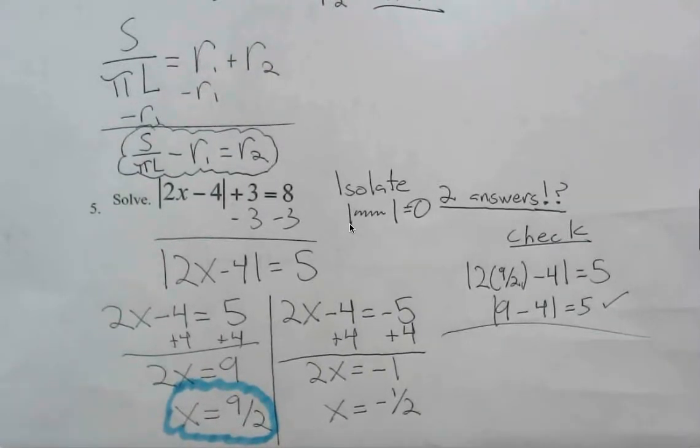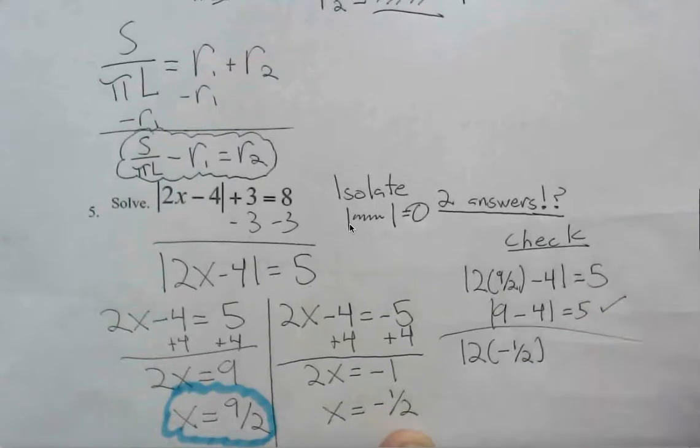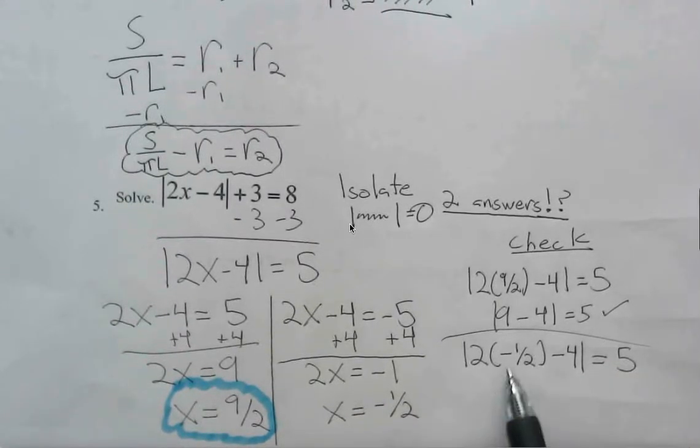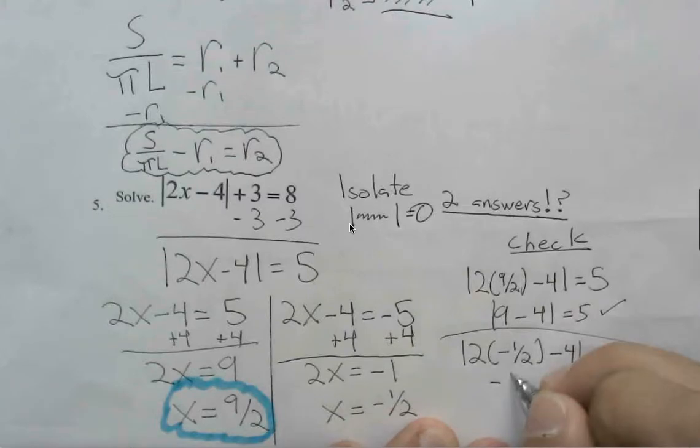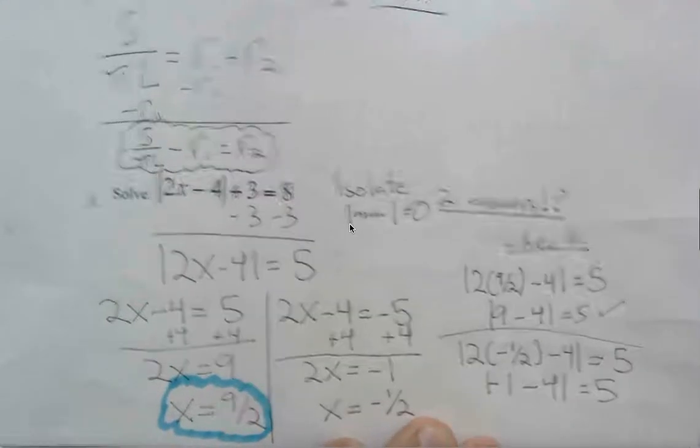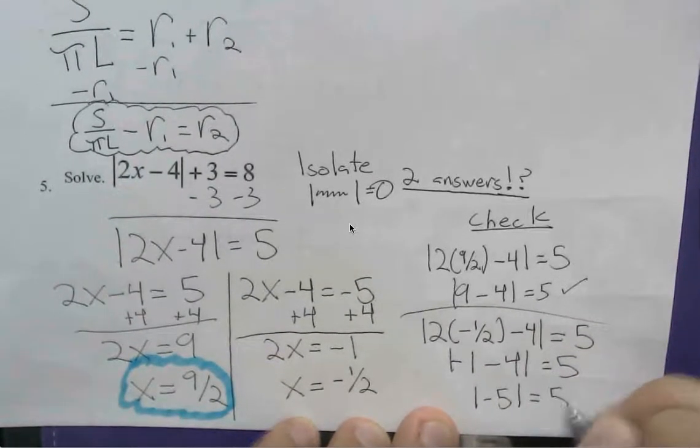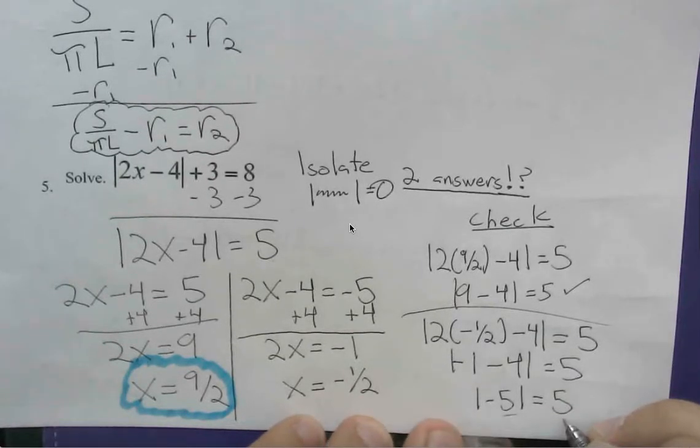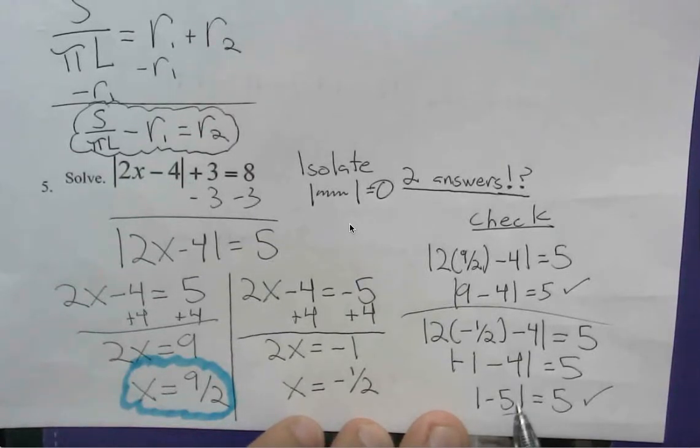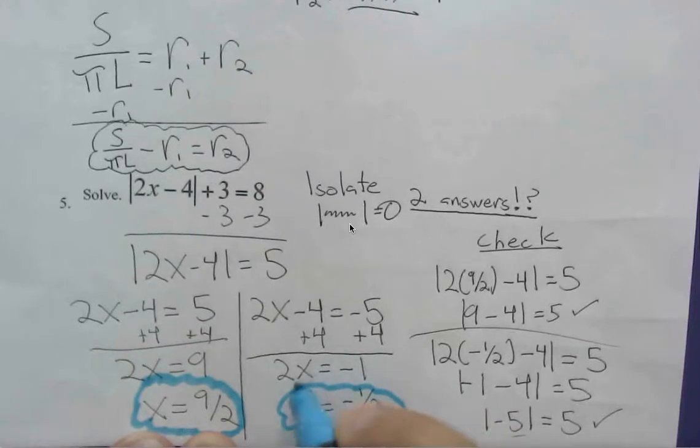If we try with negative 1 half, absolute value of 2 multiplying with negative 1 half, deducting 4, this should be equal to 5. 2 times negative 1 half is negative 1. And so what do you think? If we have negative 1 minus 4, is this a logical statement? You should be saying yeah. Because absolute value measures distance. So we always want a positive value, even if the inside's negative. So with this one, we do have two answers. So x can be equal to 9 halves or negative 1 half.